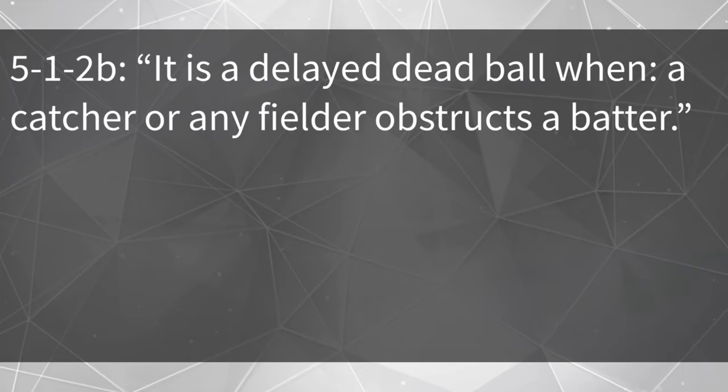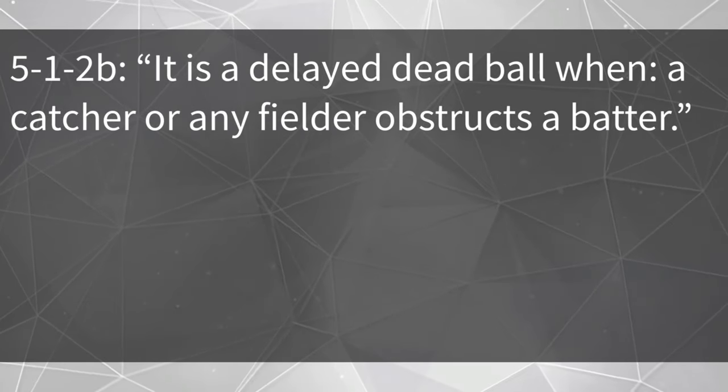Now let's look at calling the rule by starting with rule 5-1-2b. It is a delayed dead ball when a catcher or any fielder obstructs a batter. This part of the rule is the same as enforcing obstruction of a runner — it is always a delayed dead ball. When the obstruction occurs, we should point at the catcher and call out "that's obstruction" without giving the time mechanic if the ball is batted into play. Then, when all action stops, we signal the catcher's obstruction to the press box by giving the same mechanic as a foul tip and then pointing at the catcher.